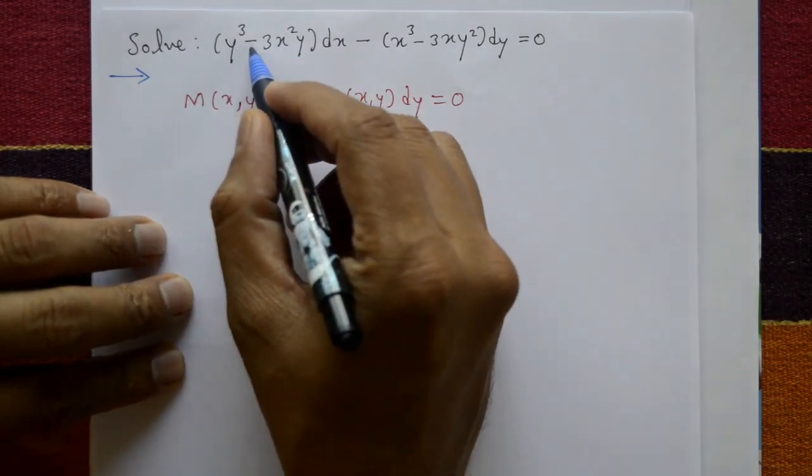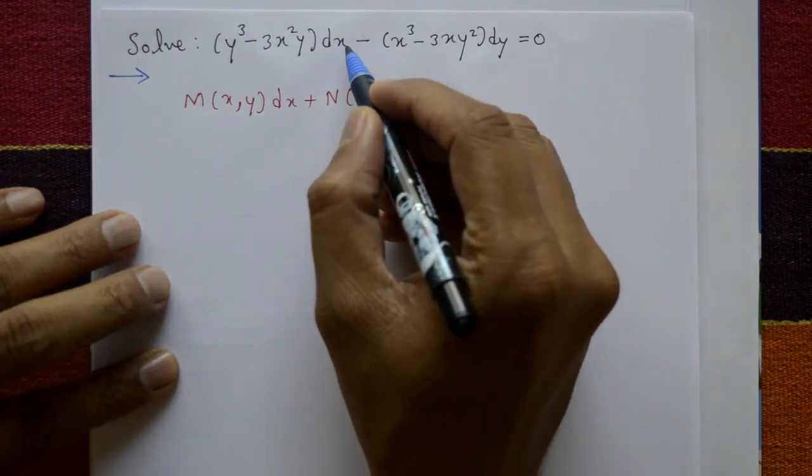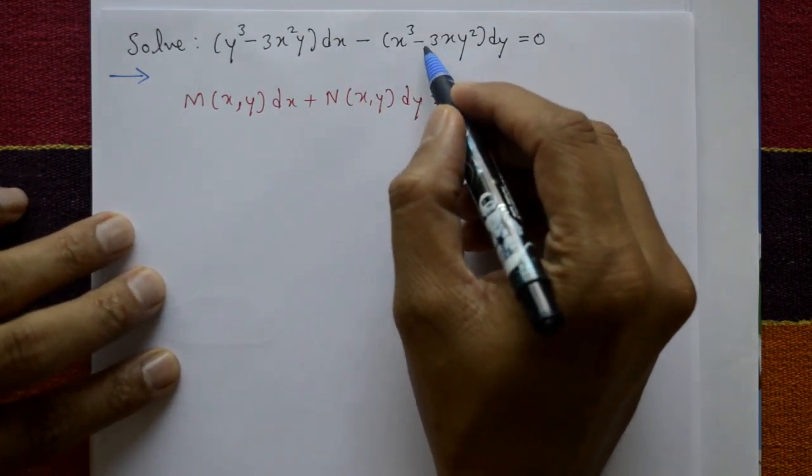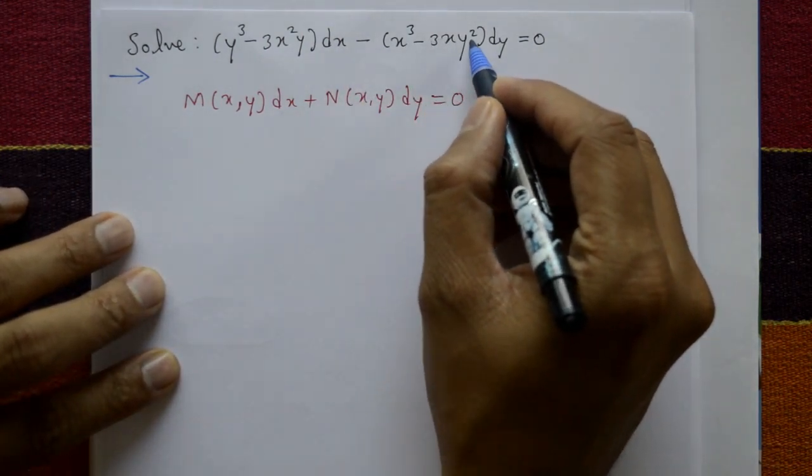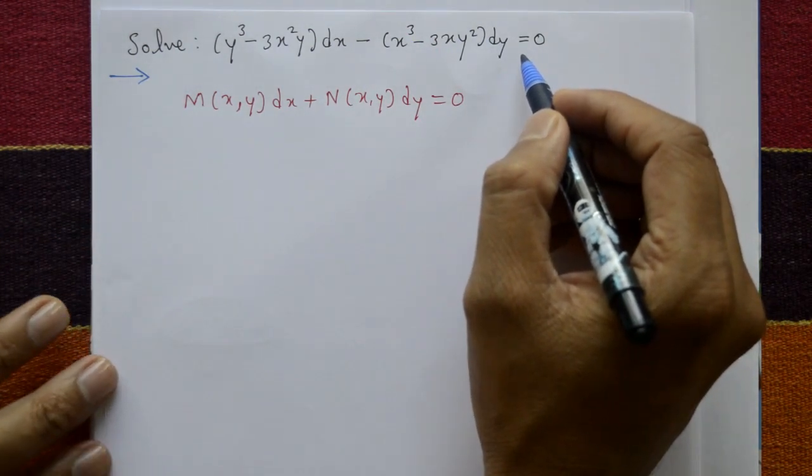Solve y cube minus 3x square y bracket into dx minus x cube minus 3xy square bracket into dy equal to 0. Find the solution.